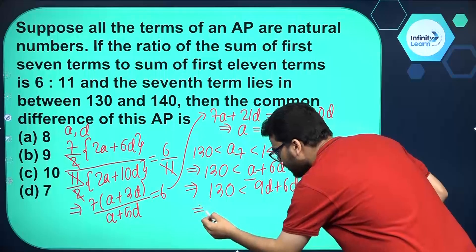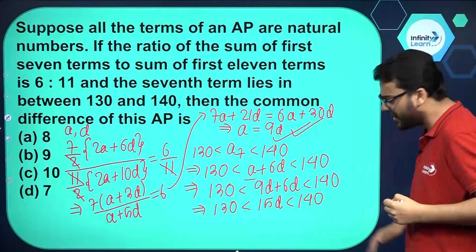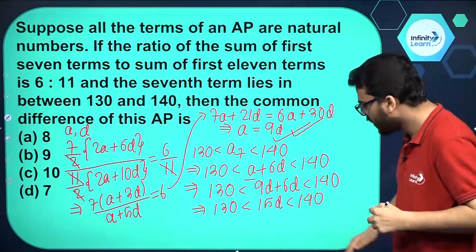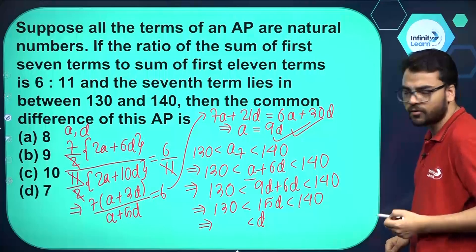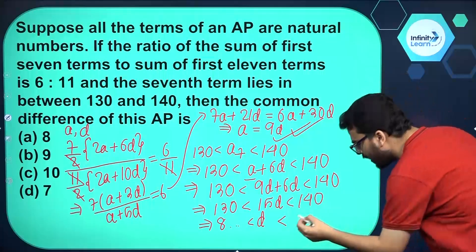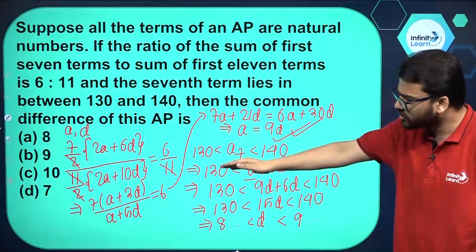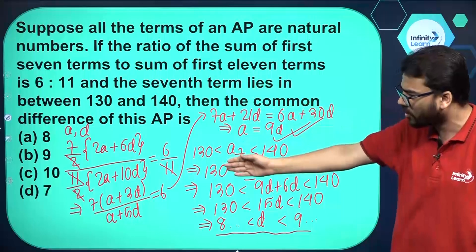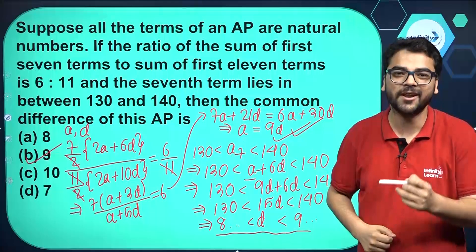Simplifying, we get 130 < 15d < 140. Dividing by 15 throughout — since 15 is positive the inequality holds — we get d > 130/15, which is 8-point-something, and d < 140/15, which is 9-point-something. So d lies between approximately 8.something and 9.something. Out of the given options, only 9 falls in this range, so the common difference of this arithmetic progression is 9.